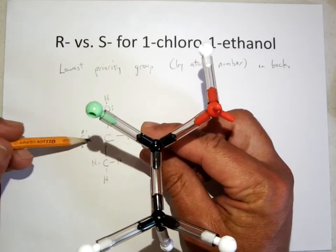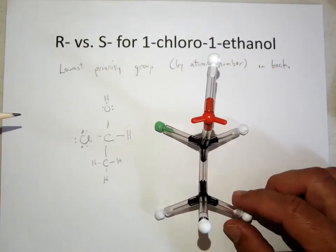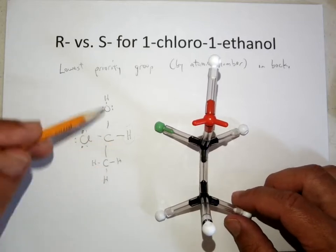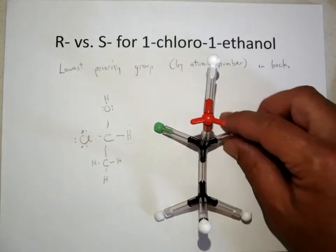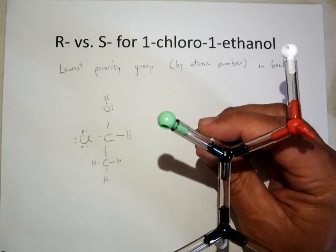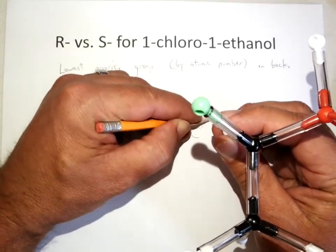So if I take this molecule, and I should see if this is this molecule. Again, this is a two-dimensional picture, so the three-dimensionality is not there. But if I go ahead and hold this in back, and carbon, hydrogen in back.